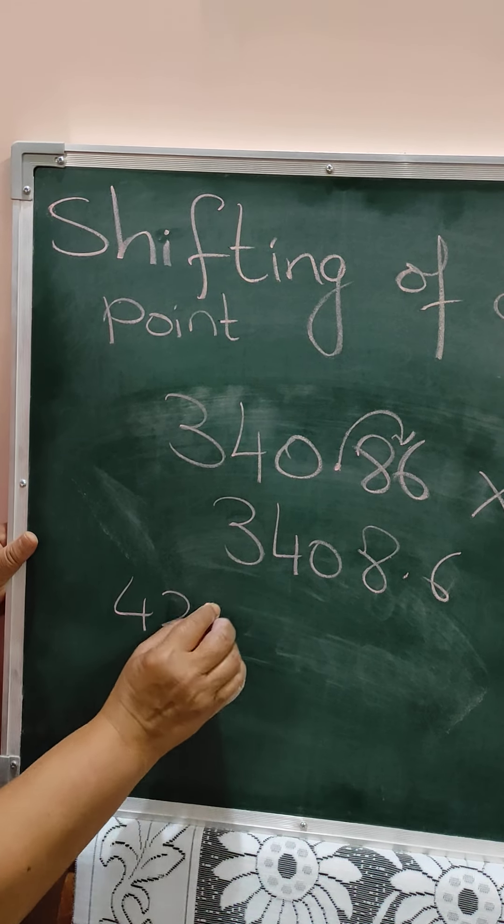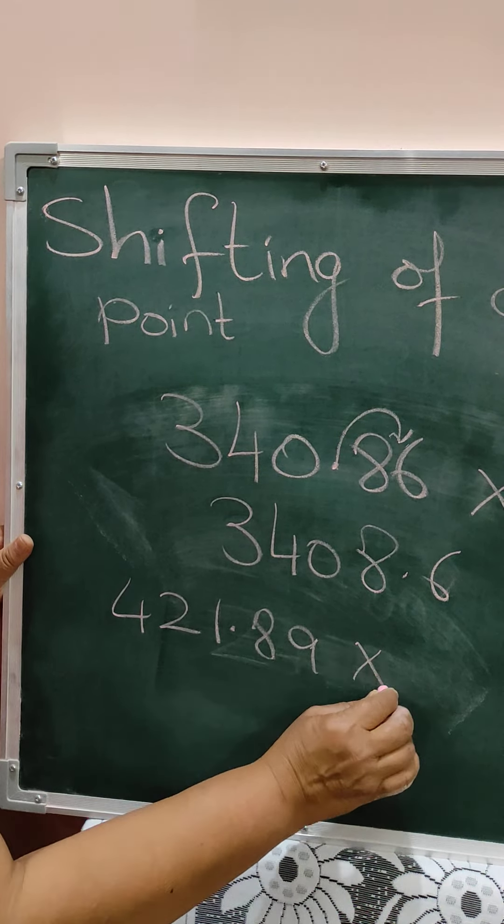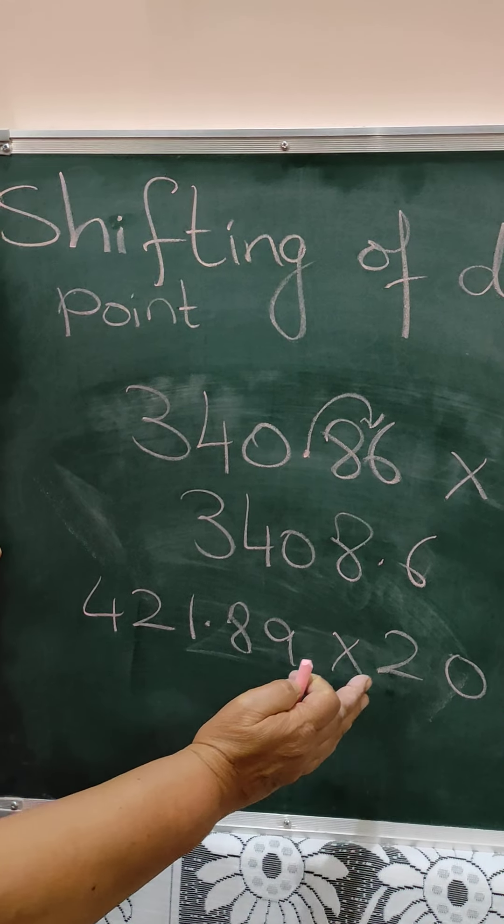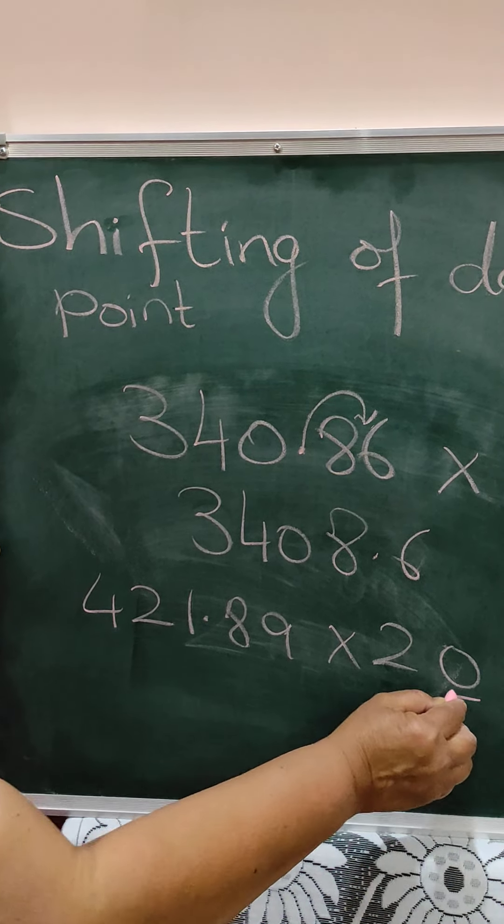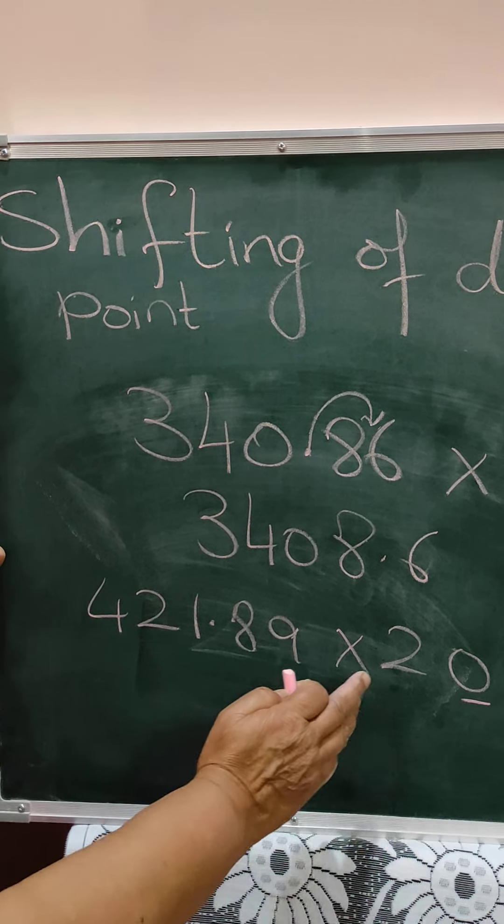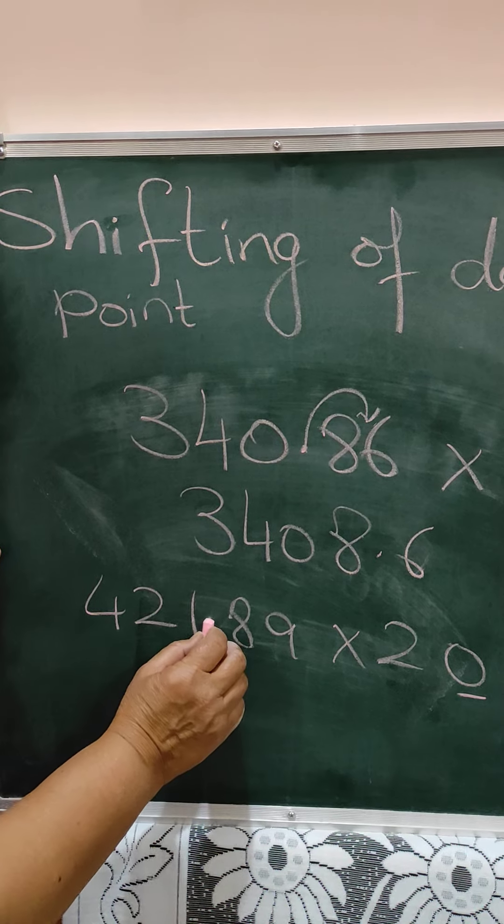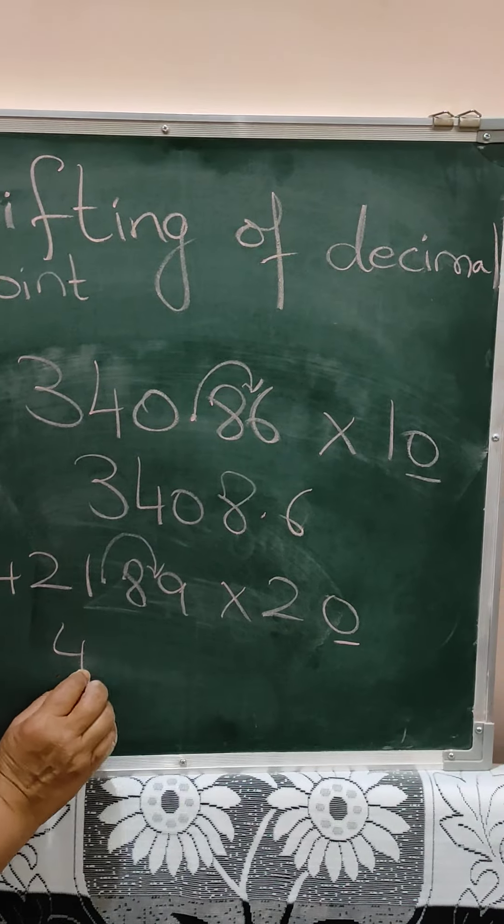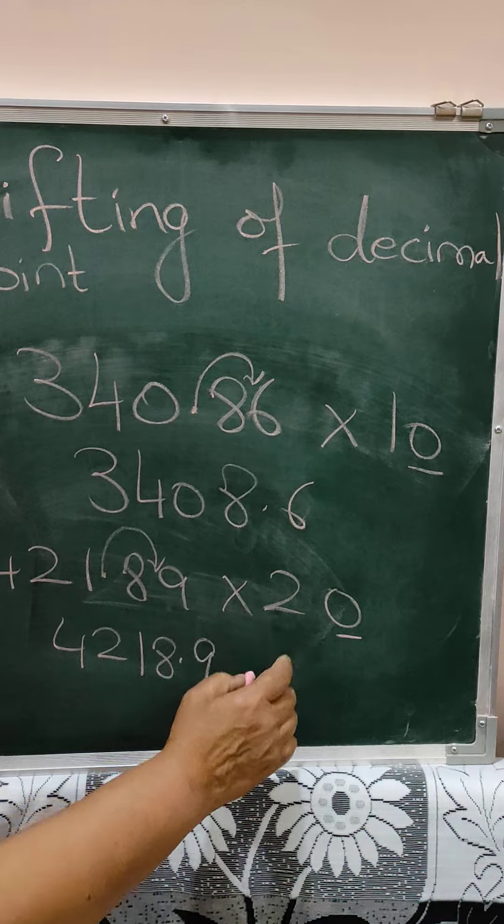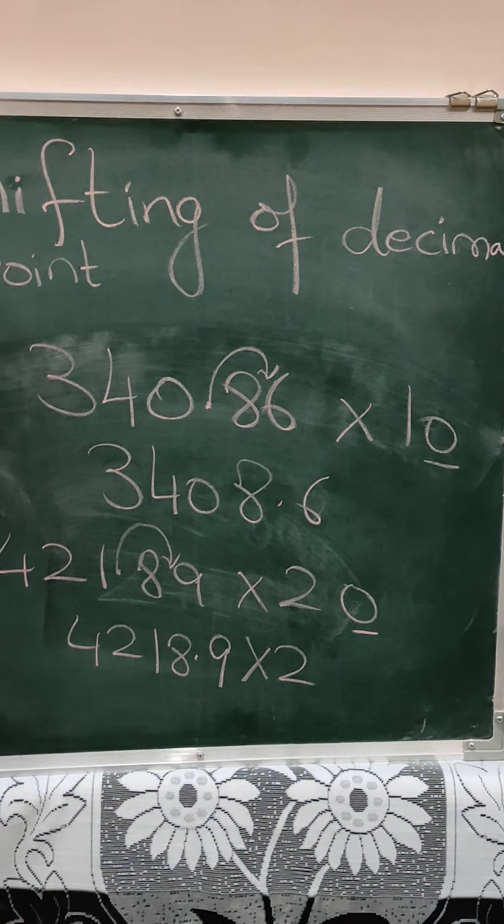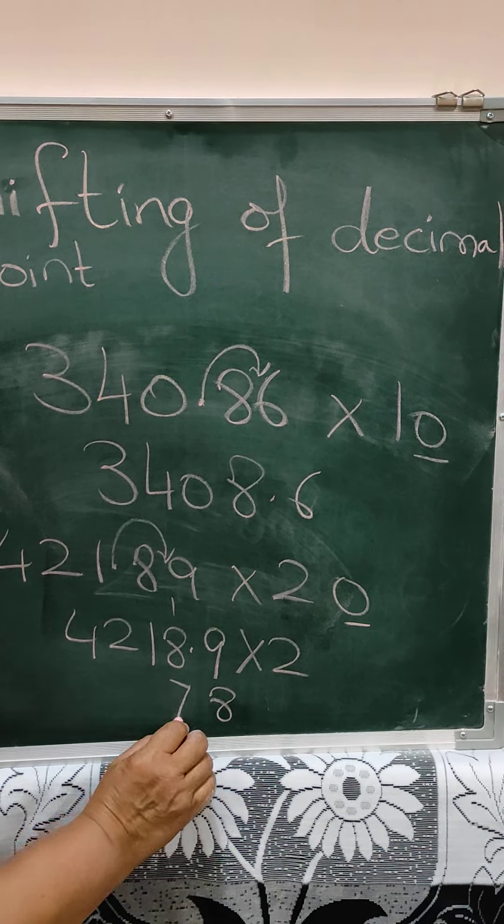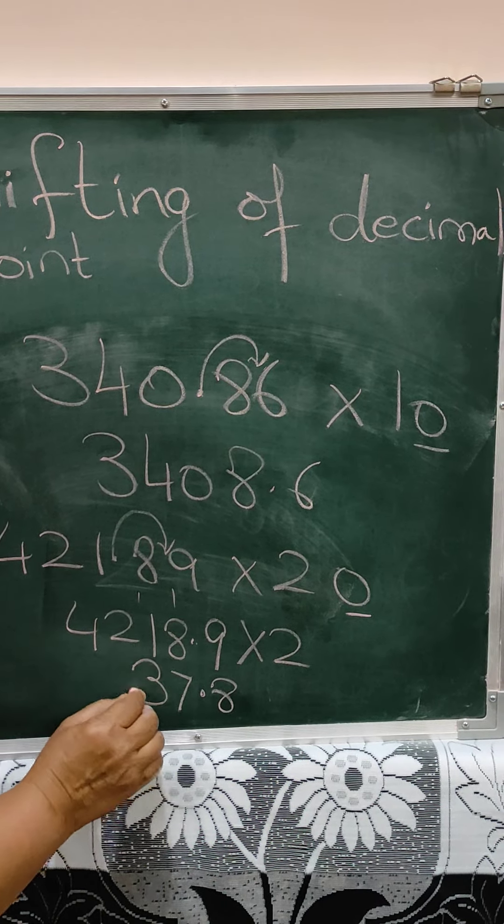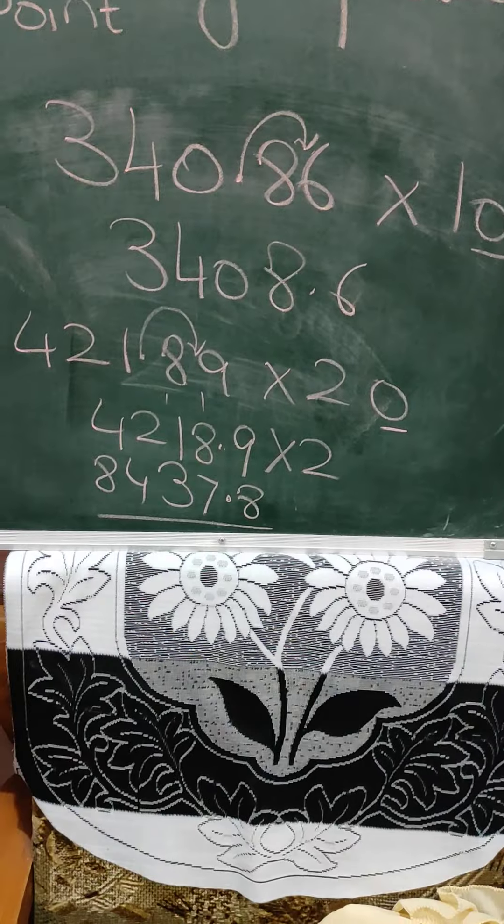Now we will take 421.89 multiplied by 20. Now multiplication by 2 is very easy. Don't take this zero. Just you underline this zero. And for this zero, what you will do? You will shift the decimal point to the right by one digit. Because there is only one zero. So it is 4218.9. And this 2 is remaining. So here you can multiply. Simple. 2 nines are 18, 1 carry, 2 eights are 16, 17. Now this decimal point will come over here. Carry over 1, 2 ones are 2 plus 1 is 3, 2 twos are 4, 2 fours are 8. See, it becomes very simple.